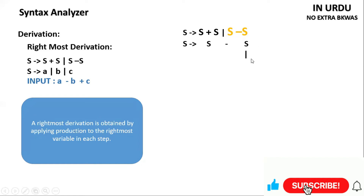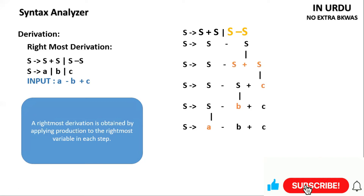We have taken this one and expanded it to S plus S. Both answers are the same here. We have to expand the rightmost variable in each step — for example, A is B plus C. I hope you all understand it.